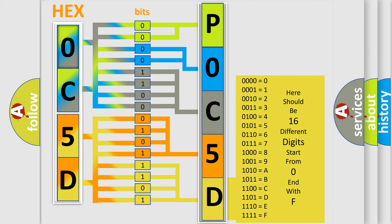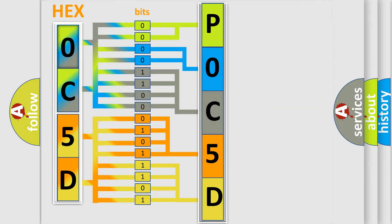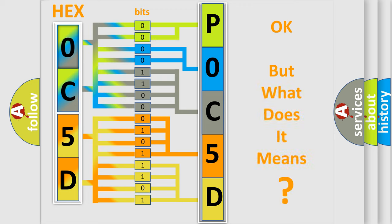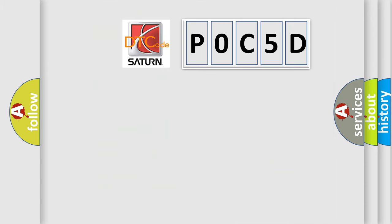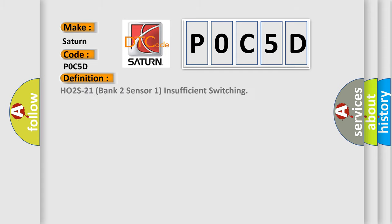We now know how the diagnostic tool translates the received information into a more comprehensible format. The number itself does not make sense to us if we cannot assign meaning to what it actually expresses. So, what does the Diagnostic Trouble Code P0C5D interpret specifically for Saturn and car manufacturers? The basic definition is: HO2S21 Bank 2 Sensor 1 Insufficient Switching.